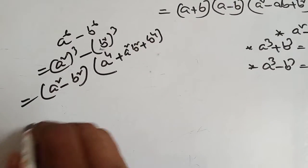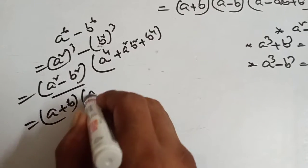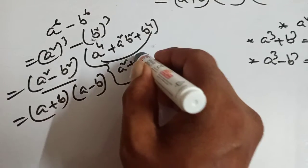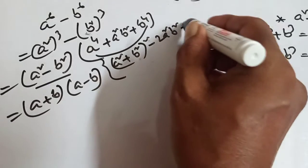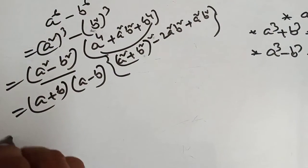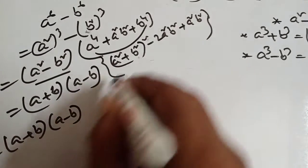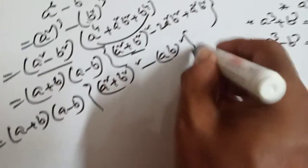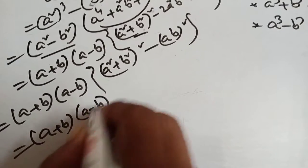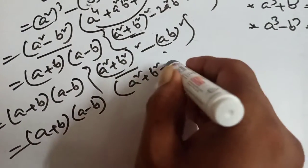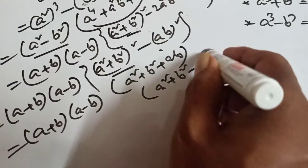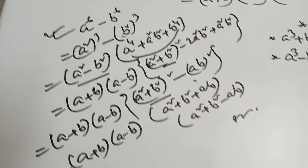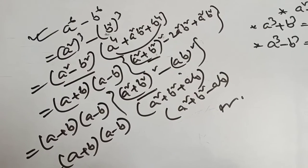Again apply the formula to the bracket A square minus B square, that means A plus B into A minus B. For the remaining factor, you can rewrite A to the power 4 plus A square B square plus B to the power 4 as A square plus B square whole square minus A square B square, which equals A square plus B square plus AB into A square plus B square minus AB. So the final answer is A plus B into A minus B into A square plus B square plus AB into A square plus B square minus AB. This is the second method.